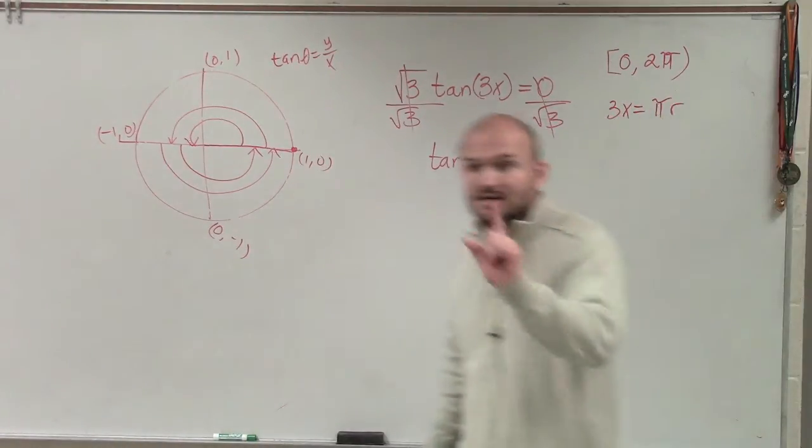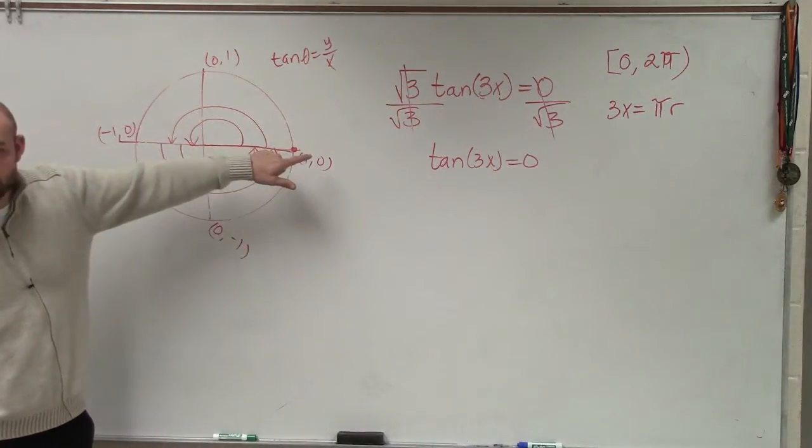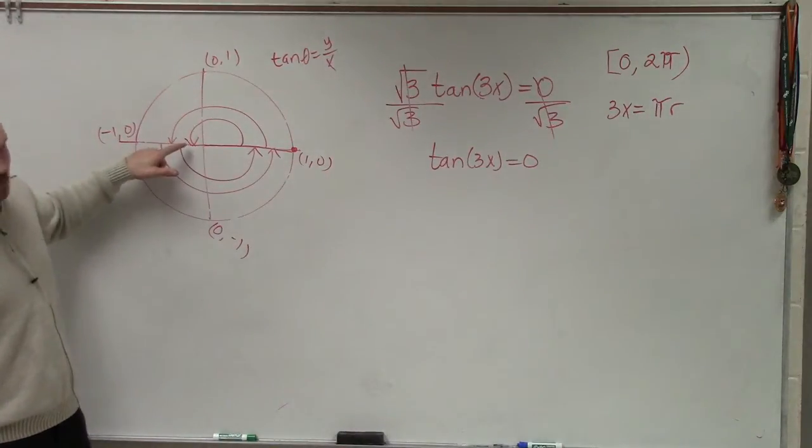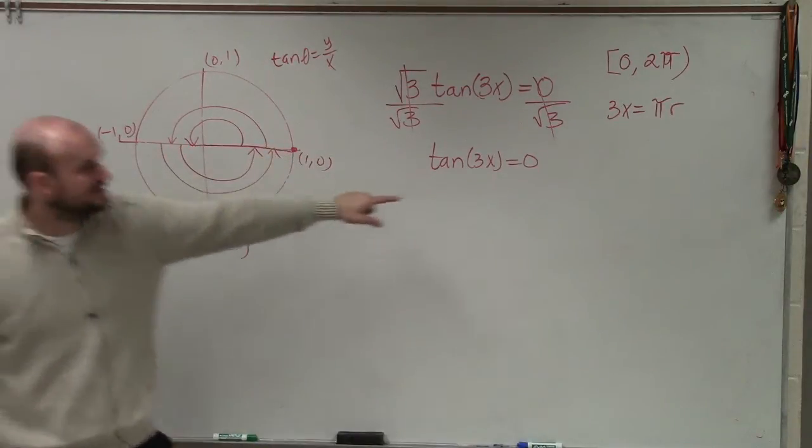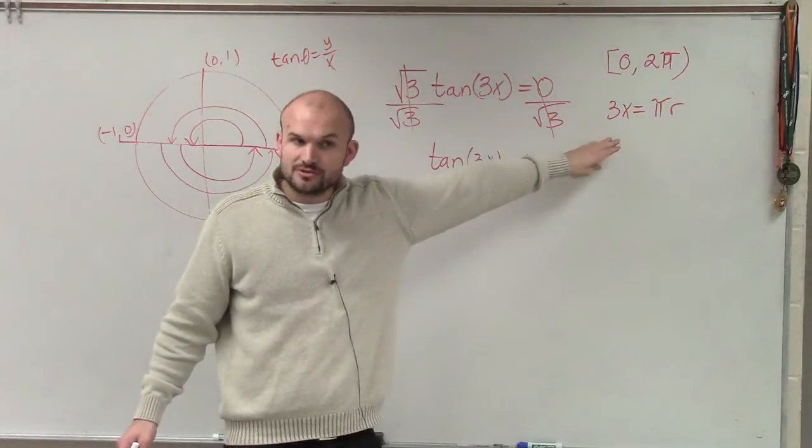Because if r is 0, then I have that angle right here, which is 0, which is a solution. And if r is 1, then I have π, which is a solution. And if r is 2, I have 2π, which again is a solution. So do you guys see how that's the correct answer if it was all solutions? However, notice we're solving for 3x, not x.